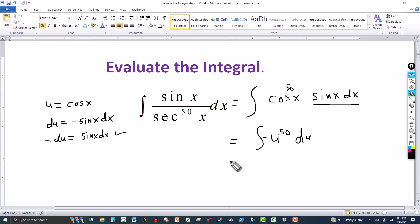And then we just integrate with respect to u. So it's just a matter of adding 1 to the 50 here, that's 51, got the minus there, and then divide by 51, and you got the constant of integration.